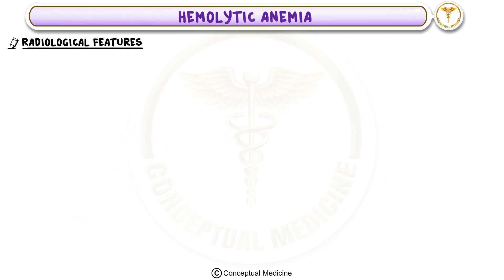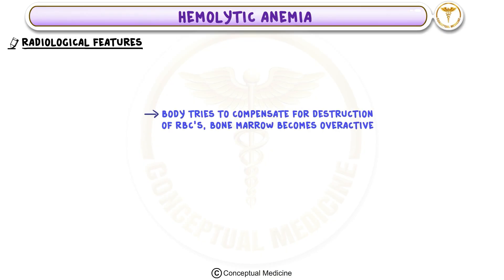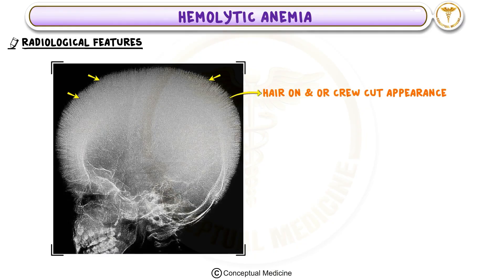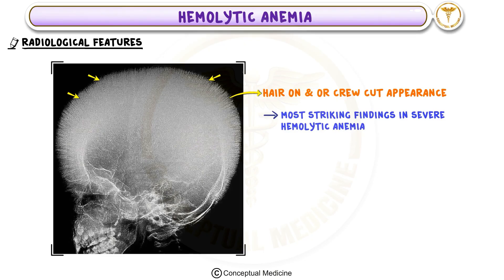Radiological Features: Since the body tries to compensate for the destruction of RBCs, the bone marrow becomes overactive, leading to characteristic radiological changes. One of the most striking findings on skull X-rays in patients with severe hemolytic anemia is the hair-on-end or crew-cut appearance. But what causes this?